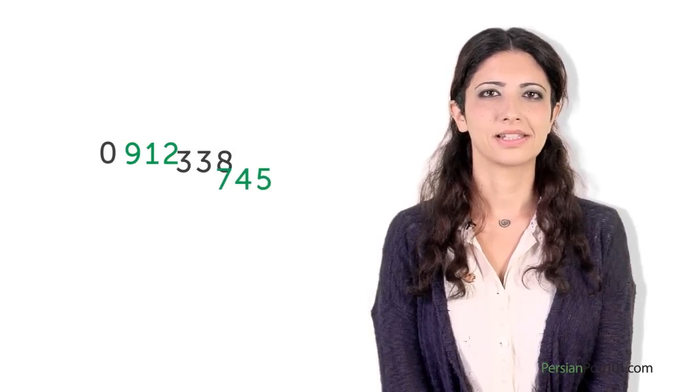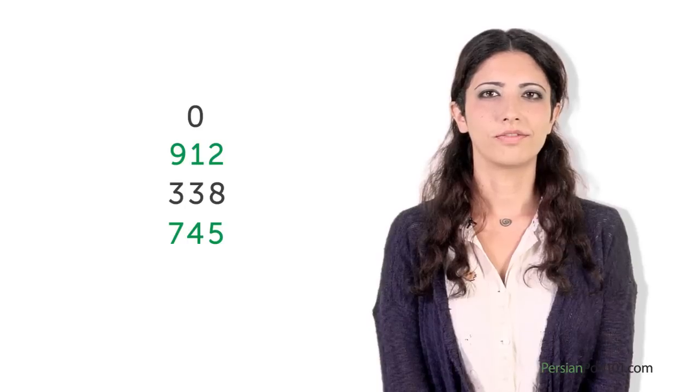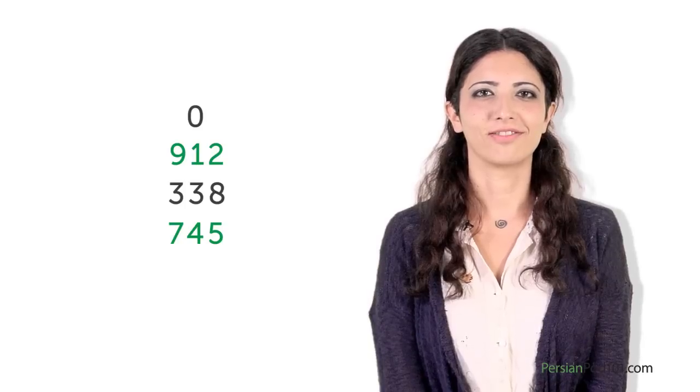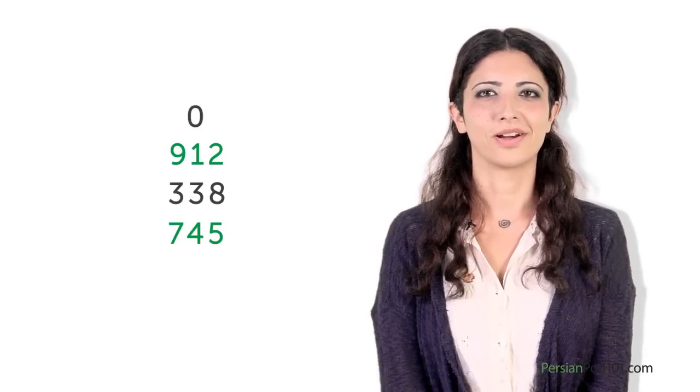Perfect! Now it's time for Anita's advice. You can give your phone number like this, but be careful, because it's more common to group the numbers in Persian. For example, this phone number would probably be read as 0, 912, 338, 745. This makes them shorter to say and easier to remember.